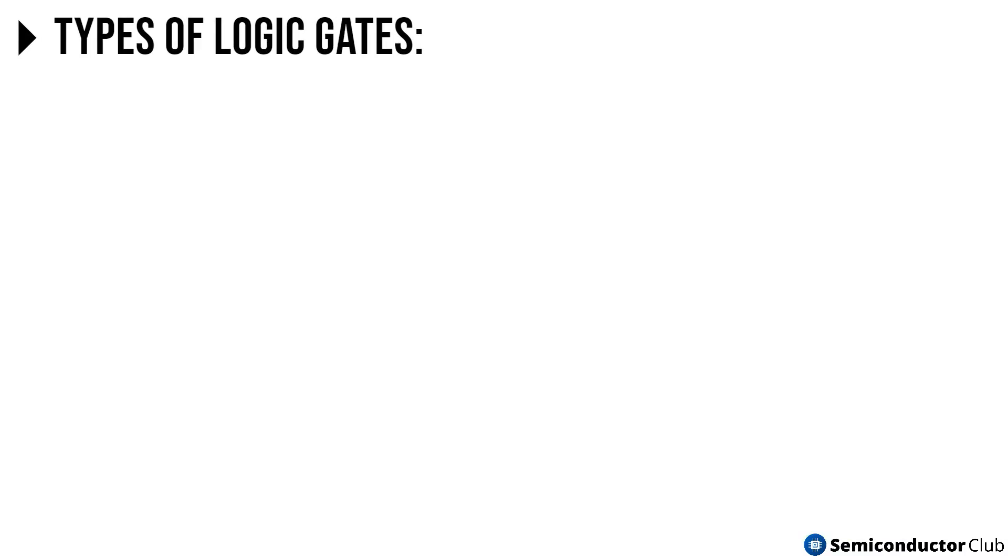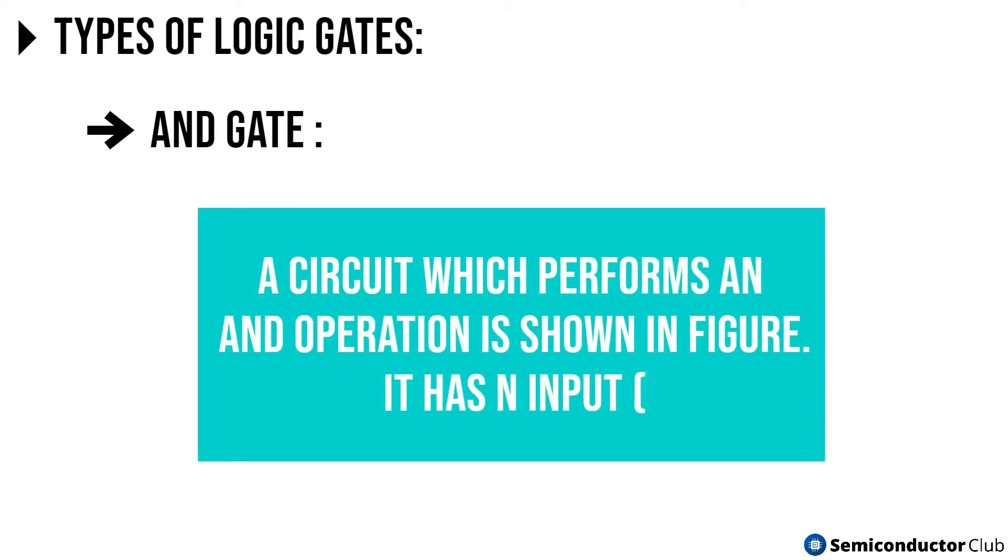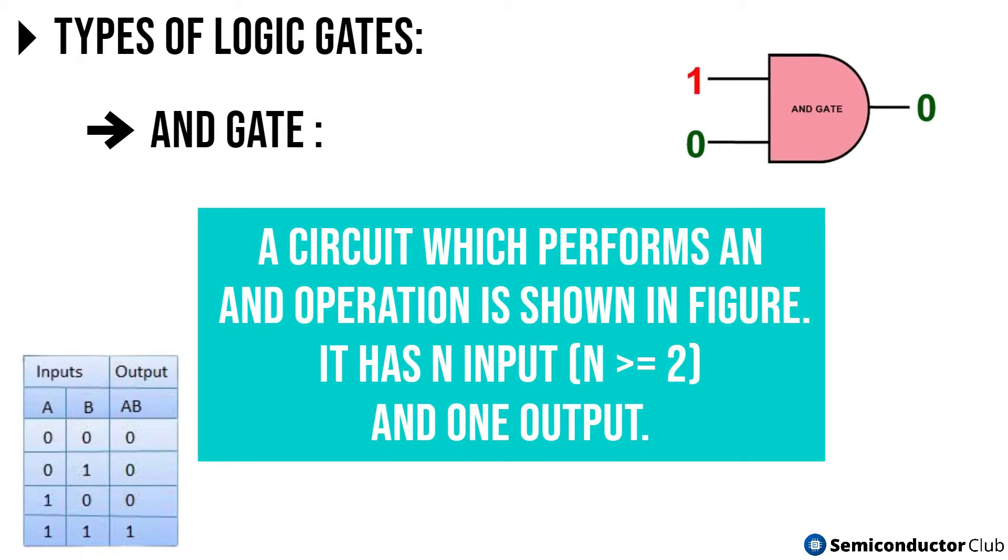Now we move on to the types of it. First is the AND gate. A circuit which performs an AND operation is shown in figure. It has N input, N greater than equals 2, and one output.